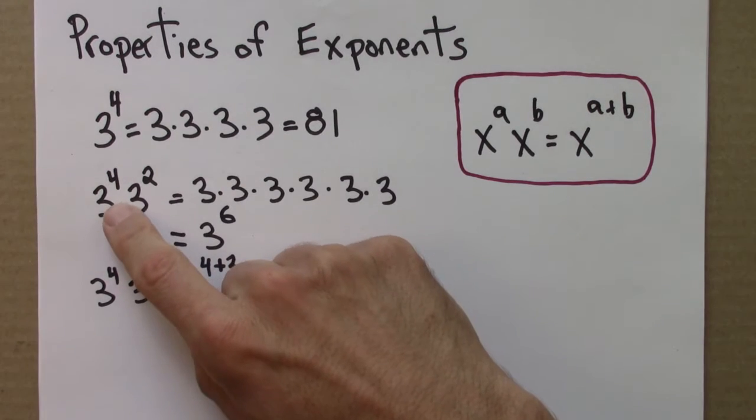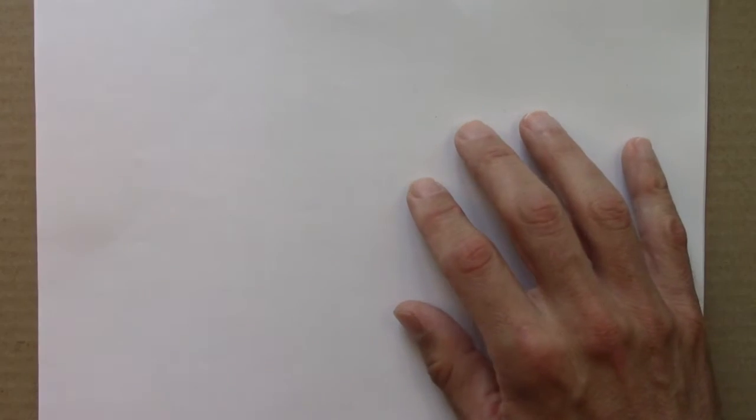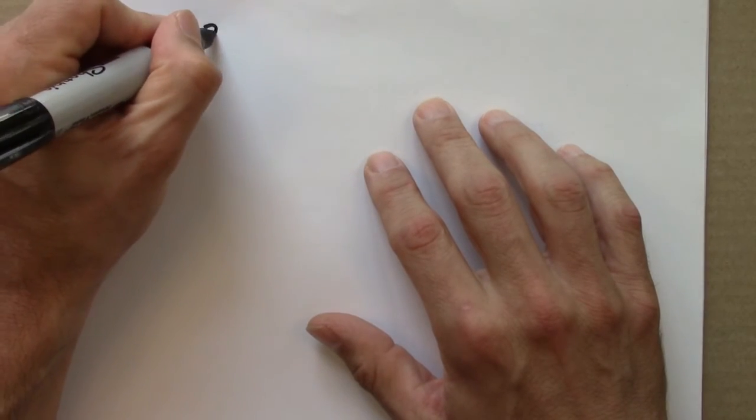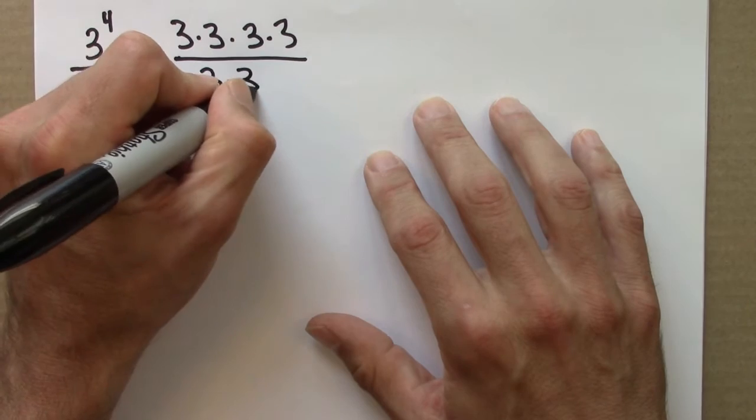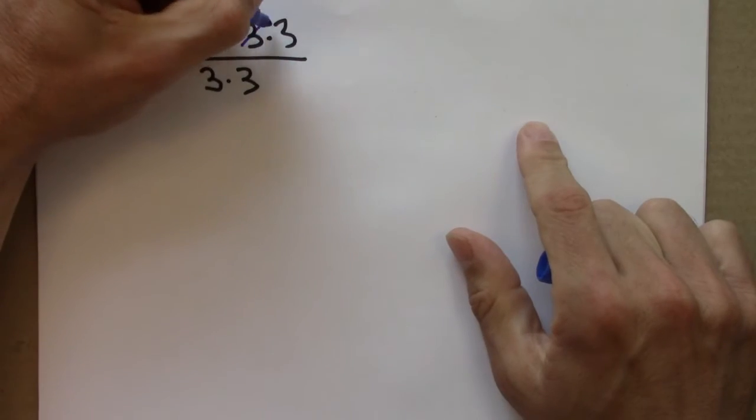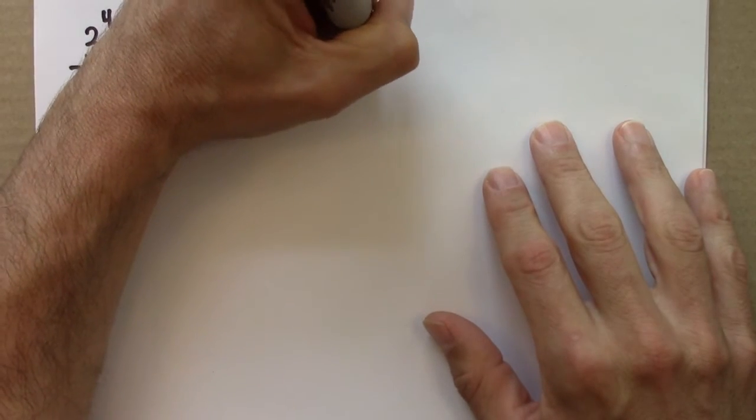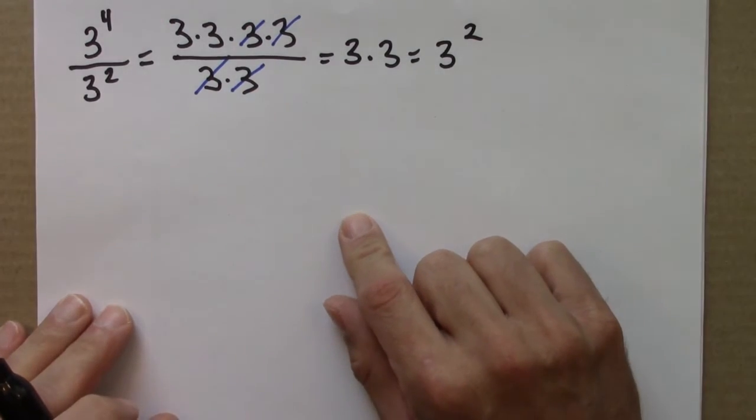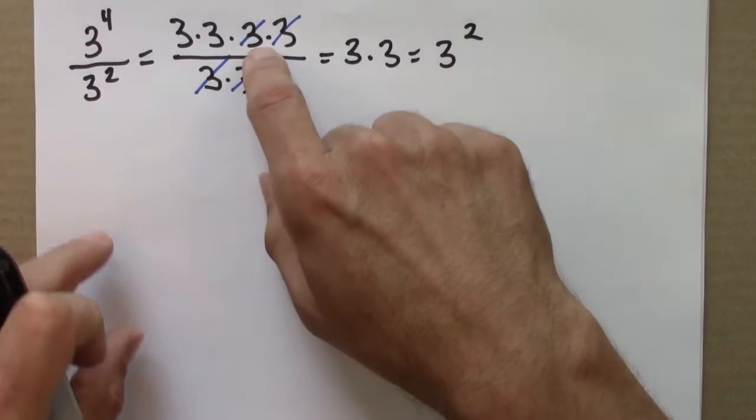So what if instead of having 3 to the 4 times 3 to the 2, we had 3 to the 4 divided by 3 to the 2? Well, 3 to the 4 is 3 times 3 times 3 times 3 over 3 times 3. So we can cancel, and we're left with 3 times 3, which is 3 squared. We had 4 threes up here, 2 threes down here. The downstairs threes canceled 2 of the upstairs threes, leaving us with 2.